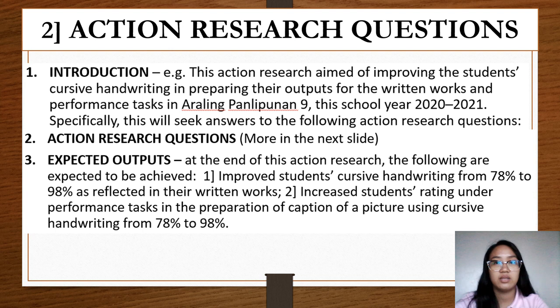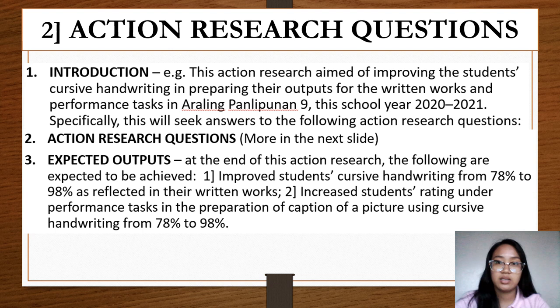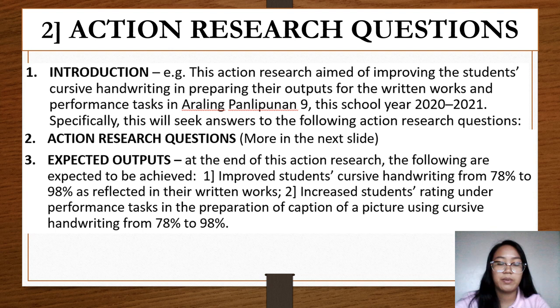For number three, we have the expected outputs. We are required to provide a minimum of one expected output for our study. Include the line: 'At the end of this action research, the following are expected to be achieved.' Then cite the expected output or outputs with the baseline data and the target. For example: number one, improve students' cursive handwriting from 78% (baseline) to 98% (target) as reflected in their written works. Number two, increase students' rating under performance tasks in the preparation of a picture caption using cursive handwriting from 78% to 98%.